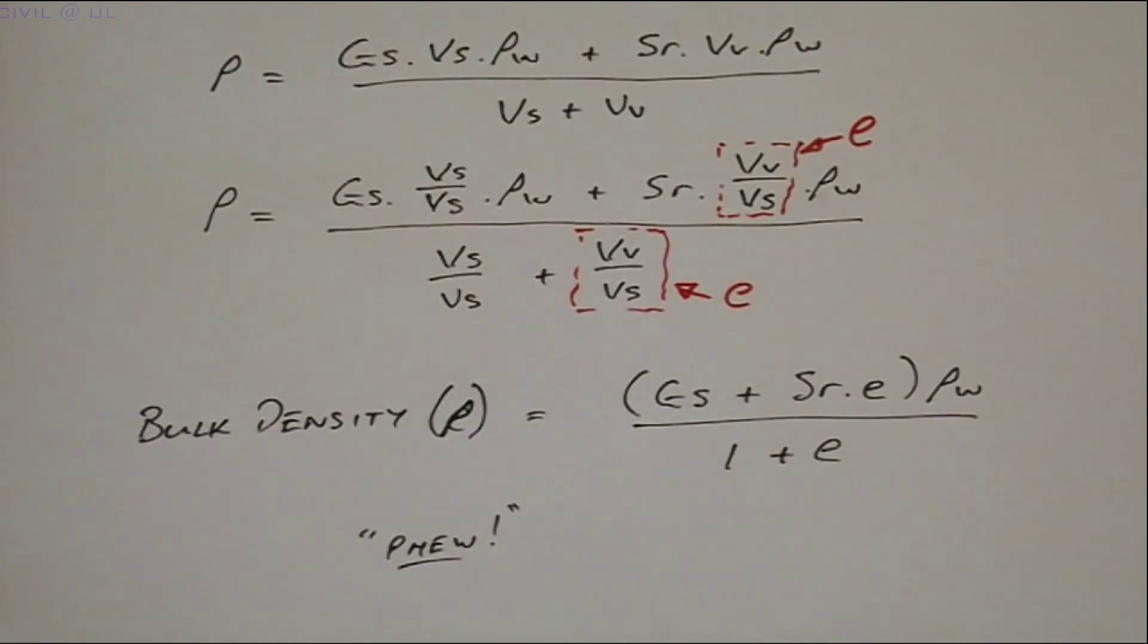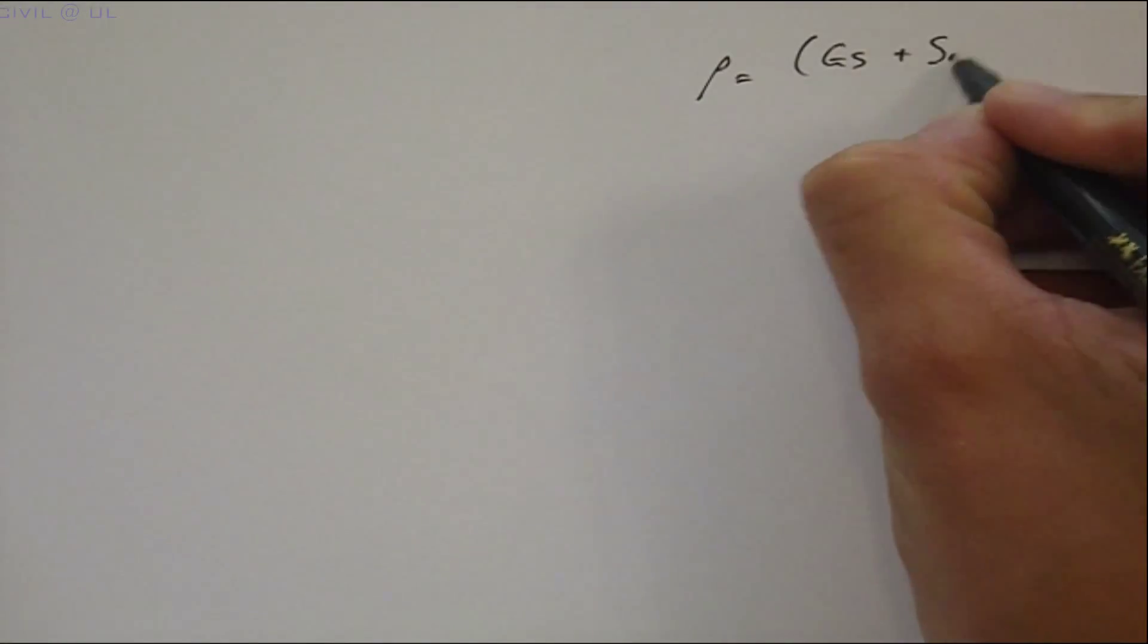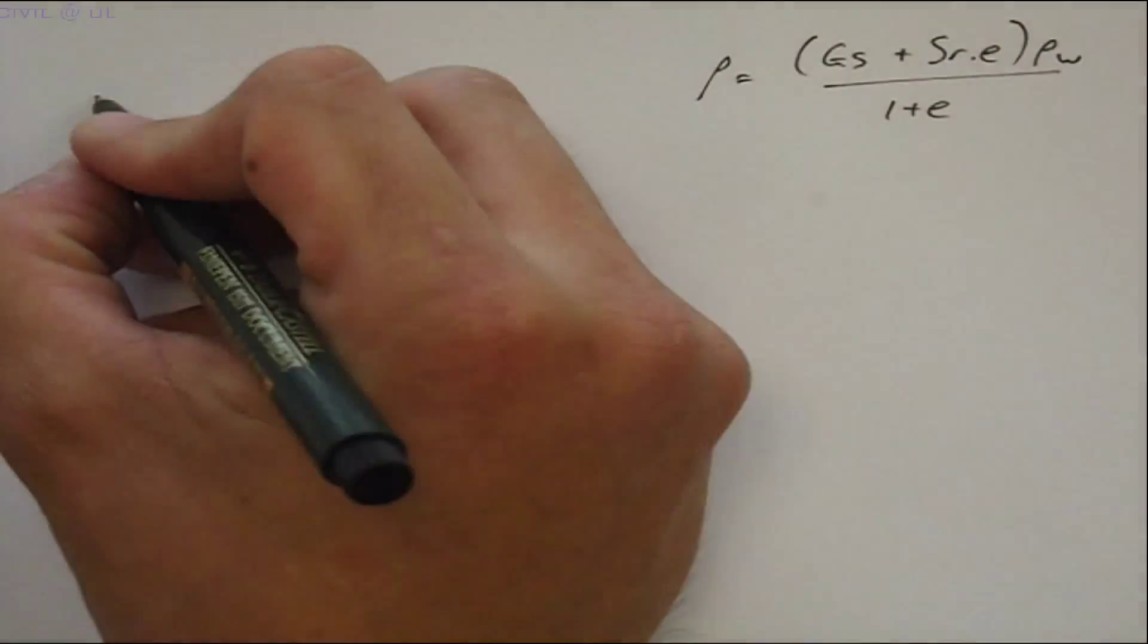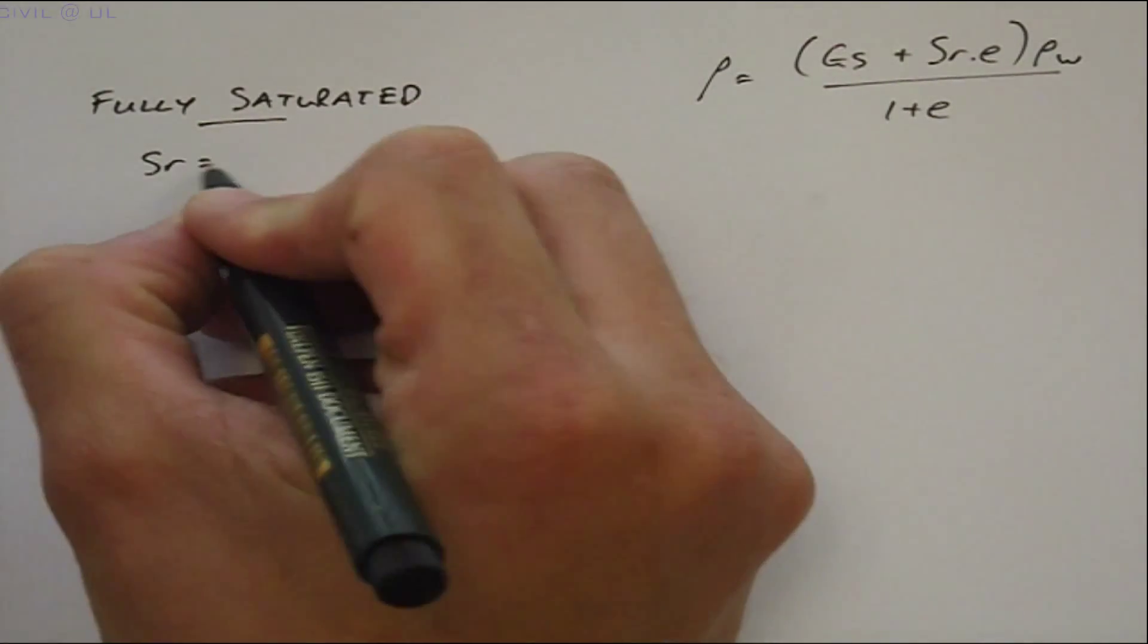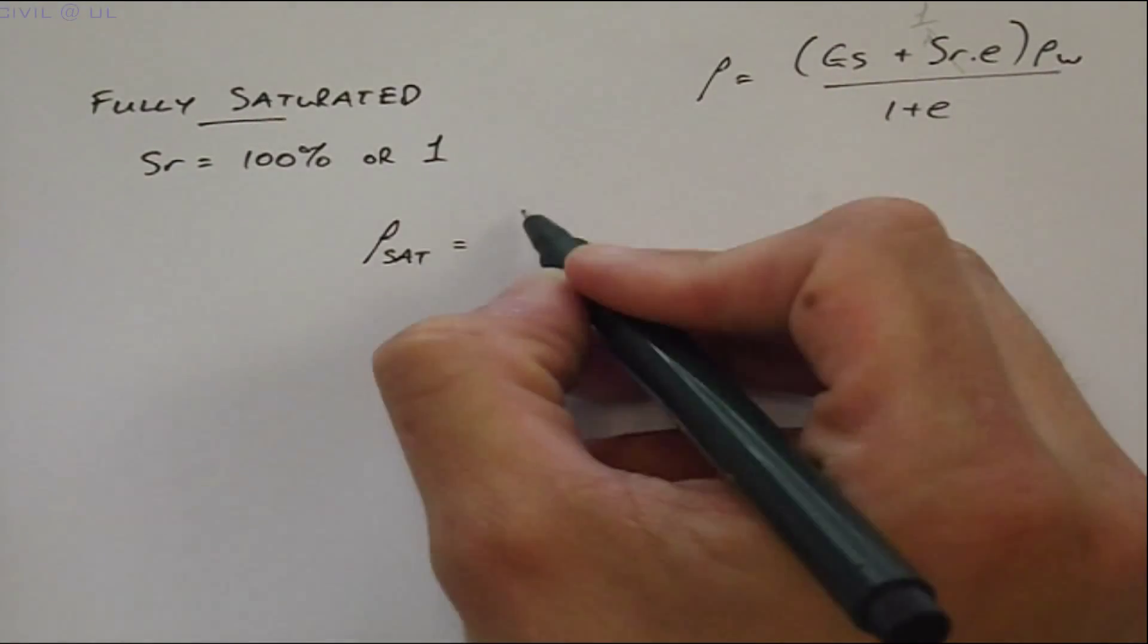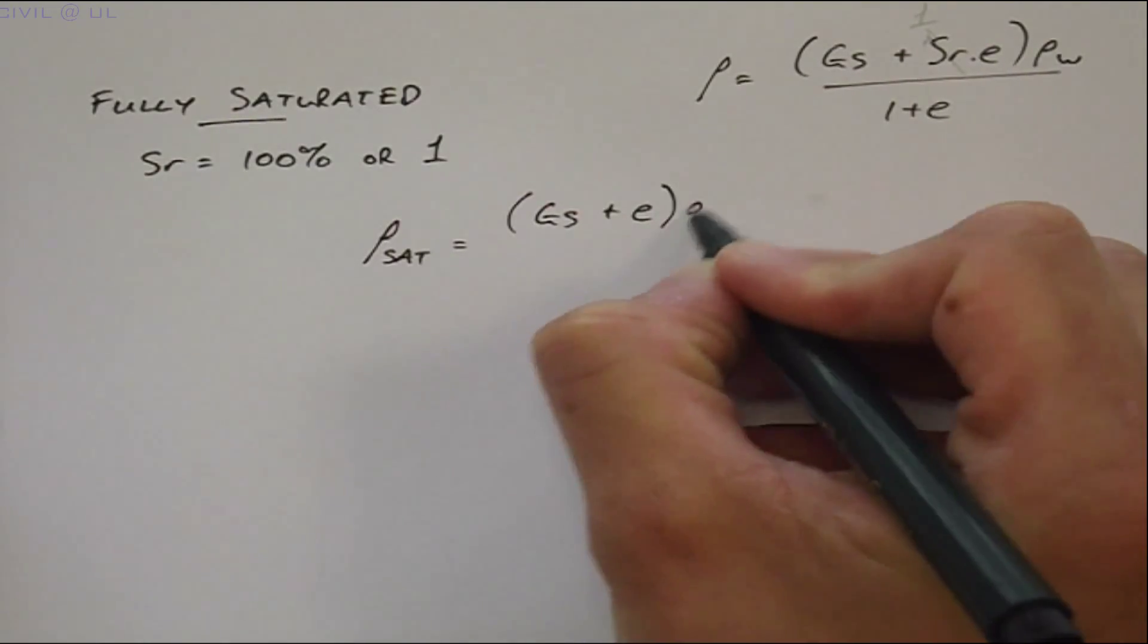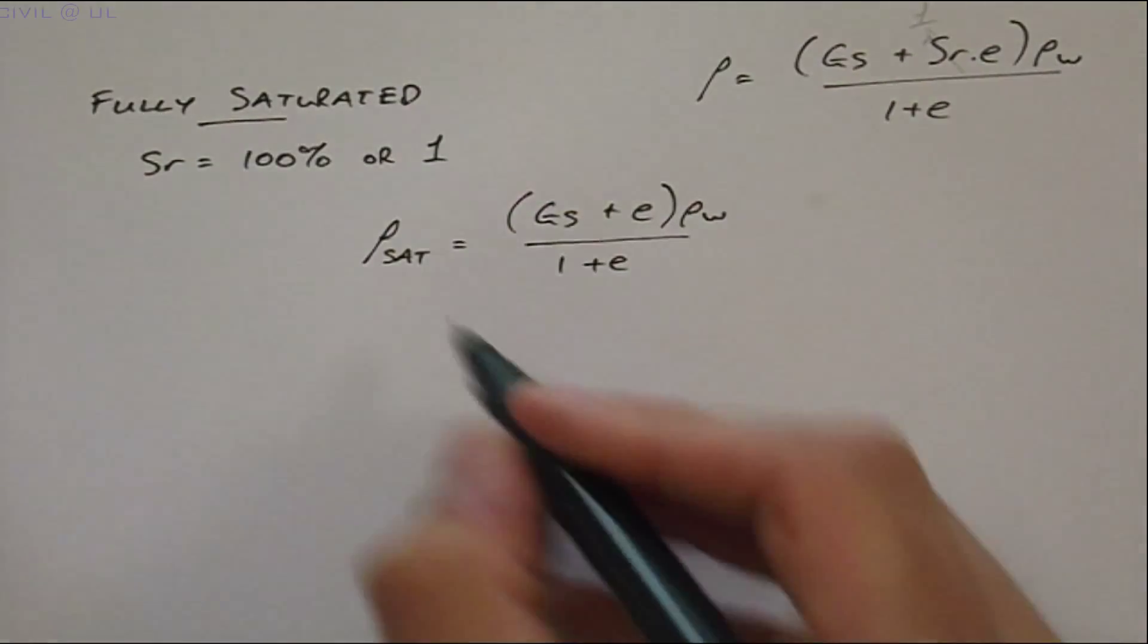The hard work is now done, and we can use our general expression for bulk density to find the other three densities. For example, when the soil is fully saturated, SR is equal to 100%. So, the saturated density simply becomes GS plus E, all by ρW divided by 1 plus E.